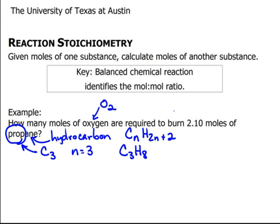Now I need to write the balanced chemical equation — it wasn't given to me. Looking at the verb 'burn': burn means combustion reaction. A combustion reaction has a fuel and O2 from the air, and when it runs to completion it produces CO2 and water. So we have our fuel, C3H8 (propane), reacting with O2 to make CO2 and H2O.